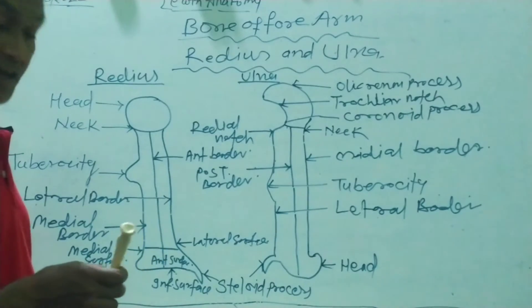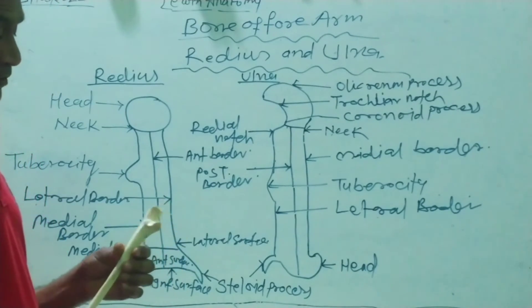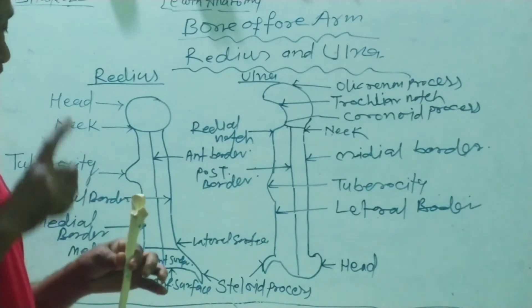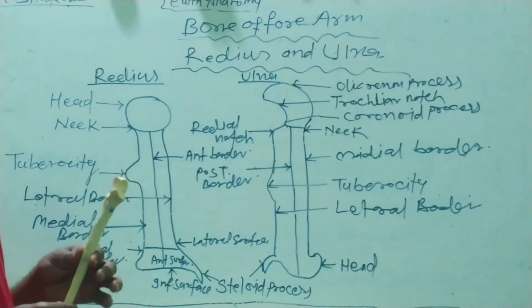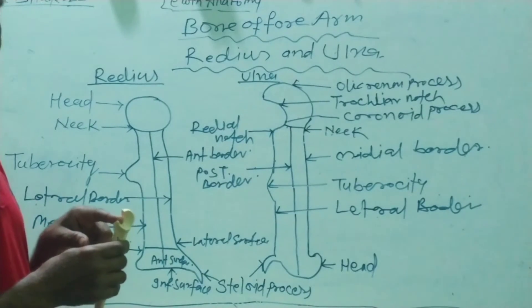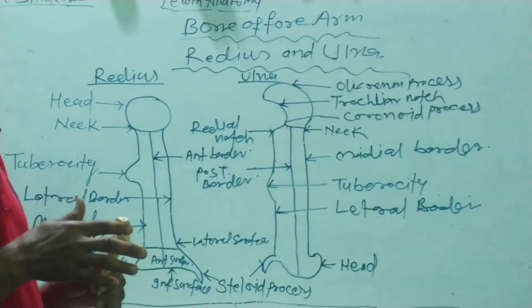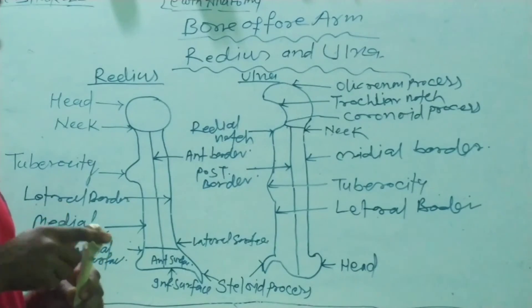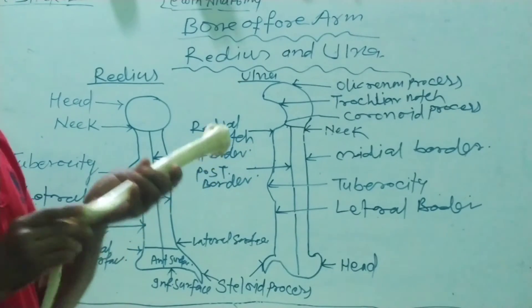Now the second bone — the medial long bone of the forearm — is known as the ulna. The ulna also presents three parts: number one, upper end; number two, lower end; and the middle part, known as the shaft of the ulna. The upper end is hook-like in projection and is shaped like a hook. This hook projection at the upper end of the ulna is known as the notch of the ulna, articulated through the trochlear notch.